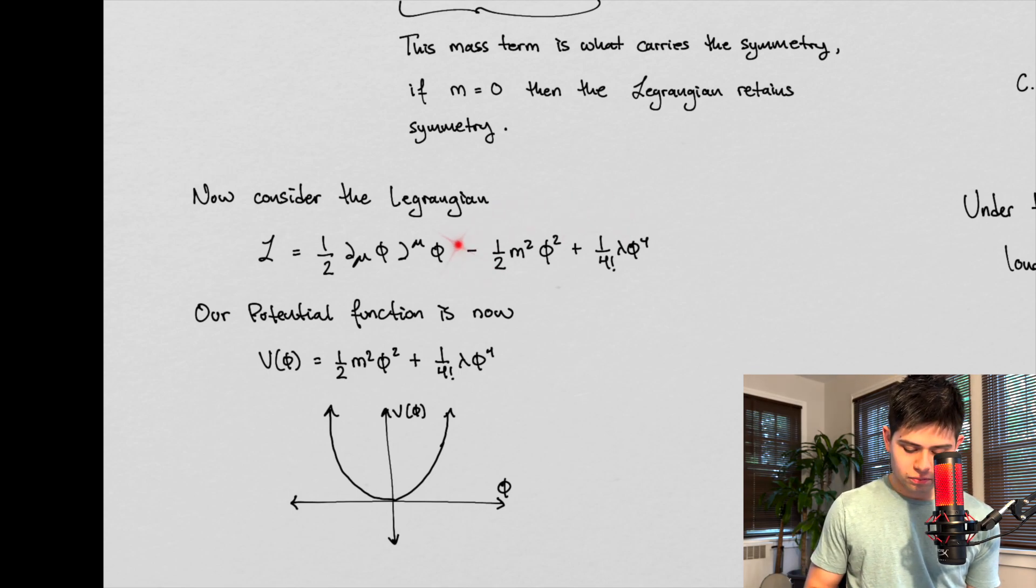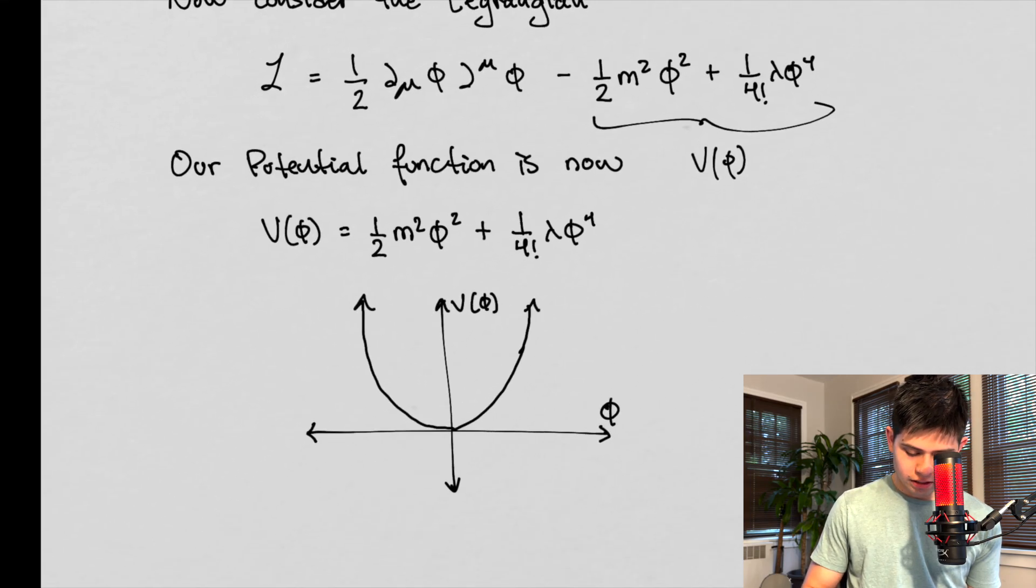What's going to play an interesting role is this sign right here. But so here's our Lagrangian. Our potential term is this guy right here. So this is V of phi. And V of phi looks like this right here.